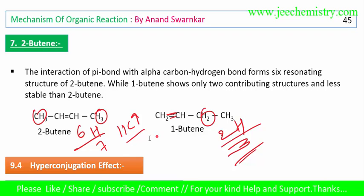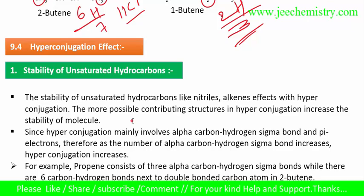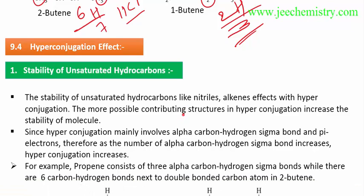More hyperconjugation means greater stability. So this compound is more stable. Now we will learn some examples of the hyperconjugation effect — how hyperconjugation affects stability, bond length, dipole moment, and other effects — we will learn these one by one.